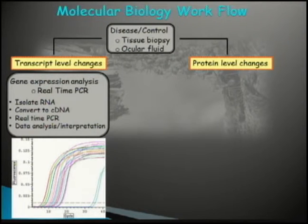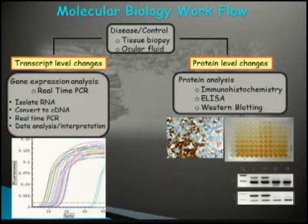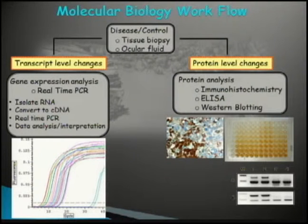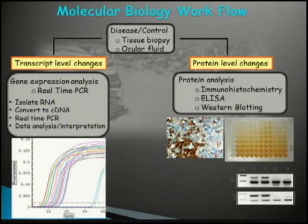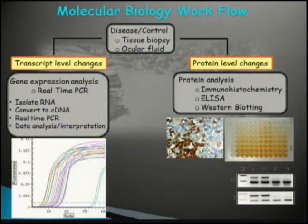If you come close to any of these tissues in your practice, you can interrogate them for transcript-level or protein-level changes. Transcript-level changes can be readily assessed by real-time PCR, and protein-level changes can be assessed by techniques such as immunohistochemistry, ELISA, or Western blotting. These techniques support a candidate molecular approach when you already know your molecules and genes. But sometimes you need to know more — in those cases you would use high-throughput techniques such as gene expression arrays or proteomics.